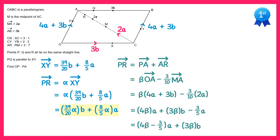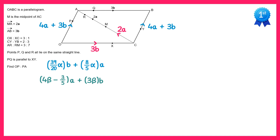We've got the first expression in blue and the second in green. Since they represent the same vector, they must be equal. The coefficients must match: looking at the coefficient of B, we have 39 over 20 alpha and 3 beta, so 39 over 20 alpha equals 3 beta. Looking at the A coefficients, 8 fifths alpha must equal 4 beta minus 3 fifths. So 8 fifths alpha equals 4 beta minus 3 fifths. This gives us simultaneous equations to solve.